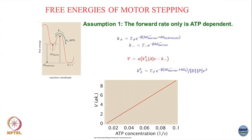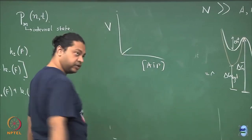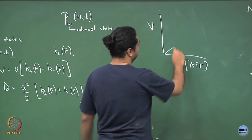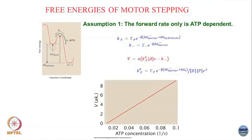Immediately you can see this is not a very good model, because the motor has some inherent speed limit. At low ATP concentration, ATP hydrolysis is the rate-limiting step, so increasing ATP increases velocity. But beyond a certain point, when ATP is at saturating concentrations, the velocity should saturate — the motor has a biochemical constraint on its maximum speed. A model where the entire ATP dependence is in the forward rate predicts linear growth with no saturation, which does not fit experimental measurements.